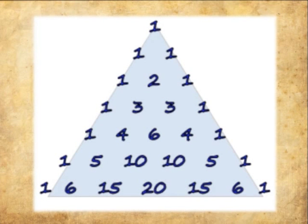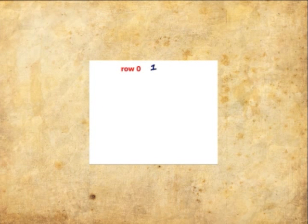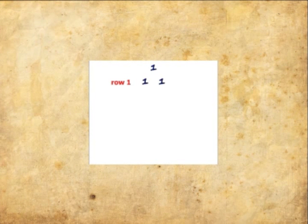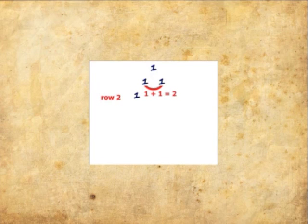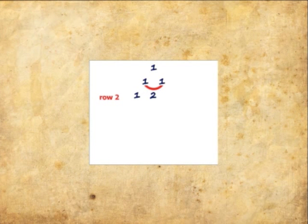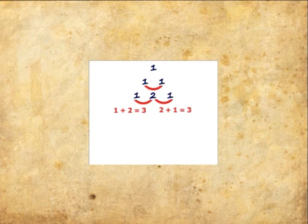How to make the triangle? First, for row 0, start with 1 at the top, then continue placing numbers below it in a triangular pattern for row 1. For row 2, except for the edges, which are all 1, each number is just the 2 numbers above it added together. Just do the same for row 3, and for the next row, do the same method.